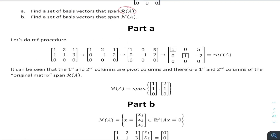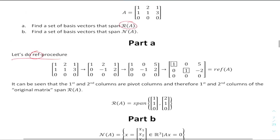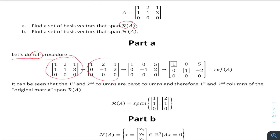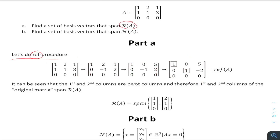Let's focus on the range space. Without even thinking about it, we do the row reduce echelon form procedure. Here is the given matrix. Let's do some basic elementary row operations to get pivot entries equal to one.